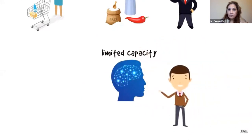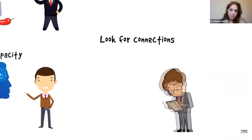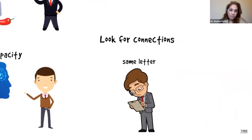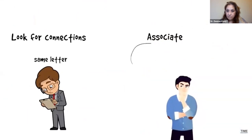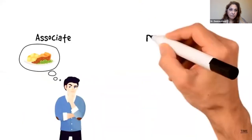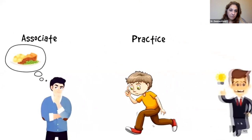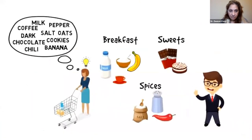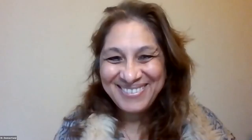Here are a few techniques to practice chunking. First, look for connections — see if there are ways to connect elements; maybe three items all start with the same letter. Second, associate — when trying to remember something, give meaning to the items; instead of trying to remember a list of ingredients, think about what meal you want to cook. Third, practice — the more you practice remembering things, the better you'll become and the fewer mistakes you'll make.